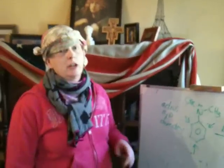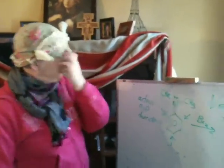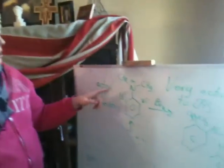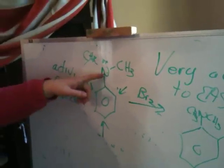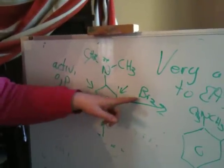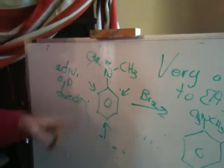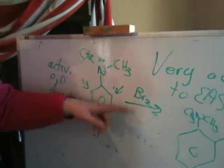Okay class, my video kind of cut off so I'm going to finish it. But all I was saying was that this kind of group is so activating to EAS that you don't really need a catalyst. And you can do this with O or N. It's only with bromine and chlorine, but you don't need a catalyst.